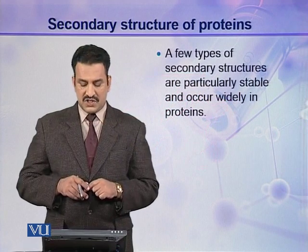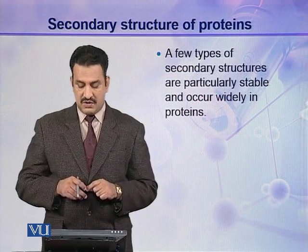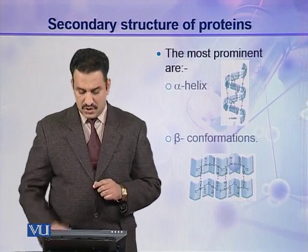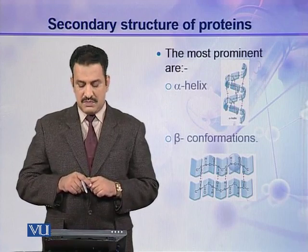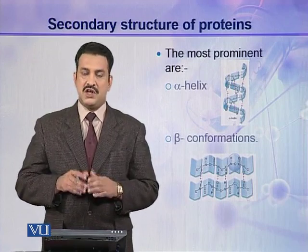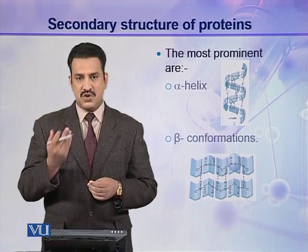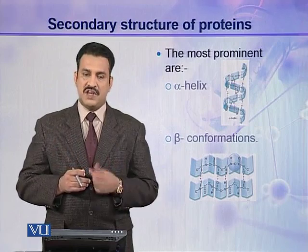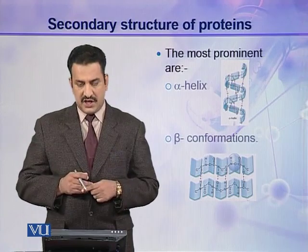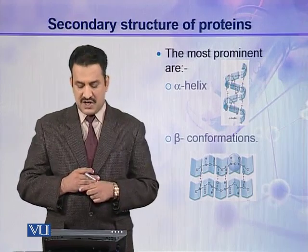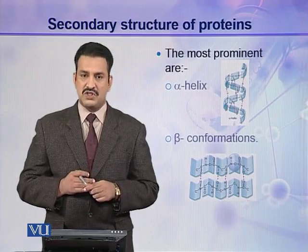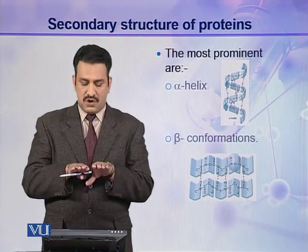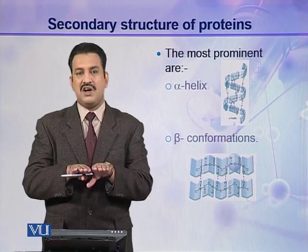However, a few types of secondary structures are particularly stable and occur widely in proteins. These types include alpha helix and beta conformations. In alpha helix, a polypeptide chain is helically coiled around an imaginary axis. This is very prominent in proteins. In beta conformations, polypeptide chains stretch side by side longitudinally and form sheets, which are called beta sheets.